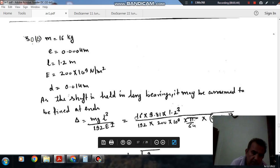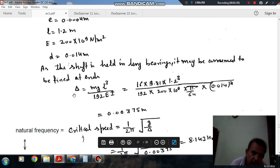W is MG. So M is 16, G is 9.81, and L is 1.2. E is 2 x 10^11. I is π/64 times D to the power 4. So the deflection comes out as 0.00375 meter.